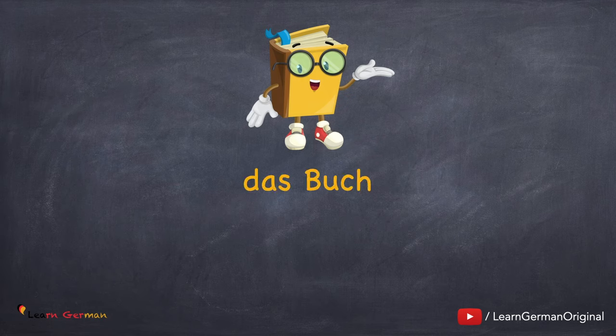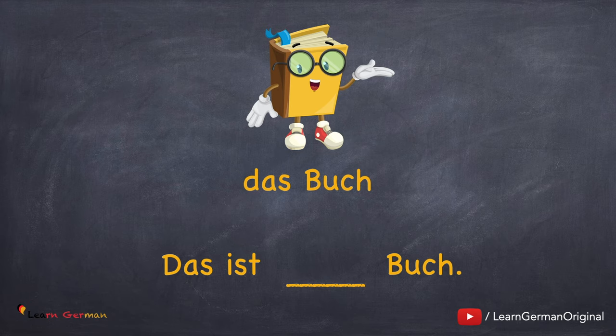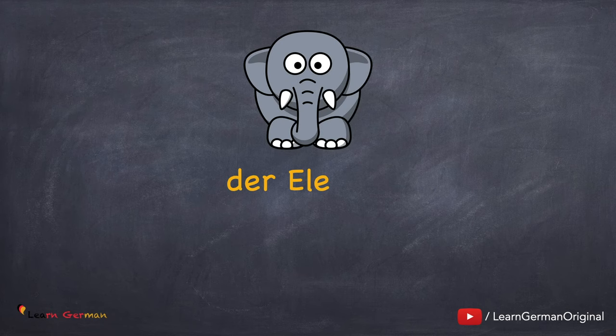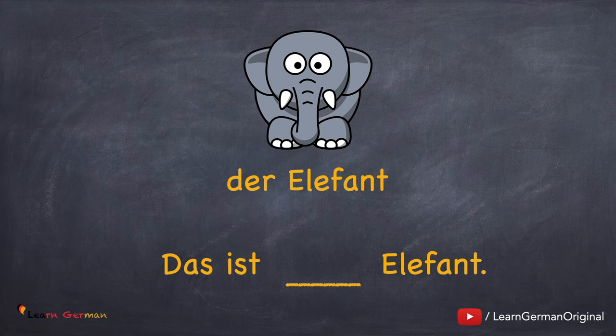Das Buch — so what is the unbestimmte Artikel for das Buch? Das ist ein Buch. Let's move on to the next one. Der Elefant — so what would be the unbestimmte Artikel here? Das ist ein Elefant.